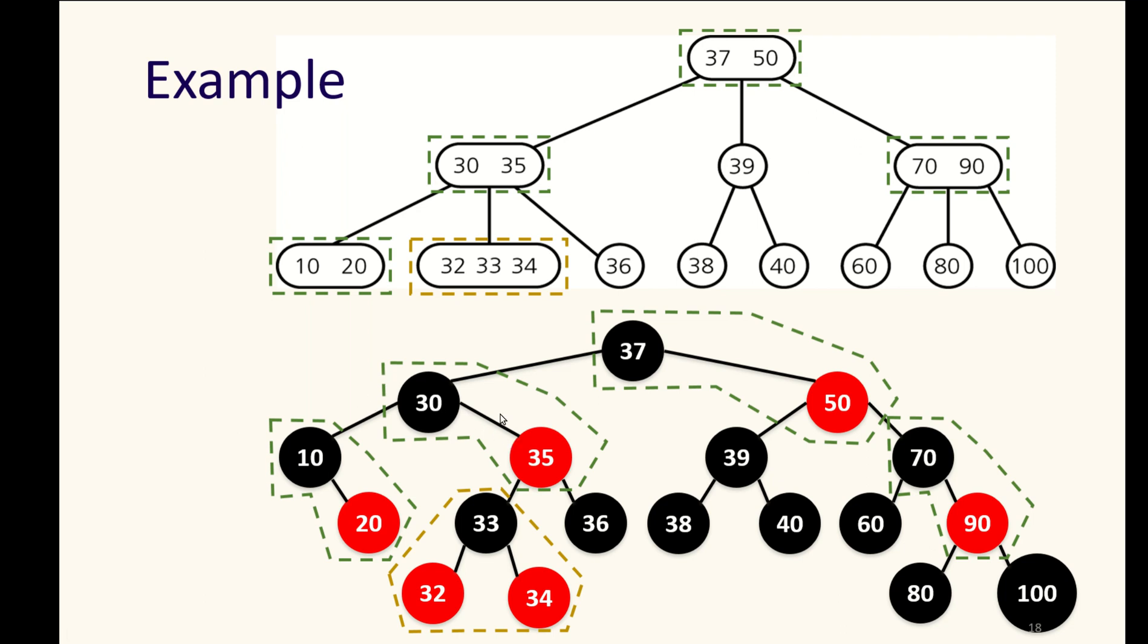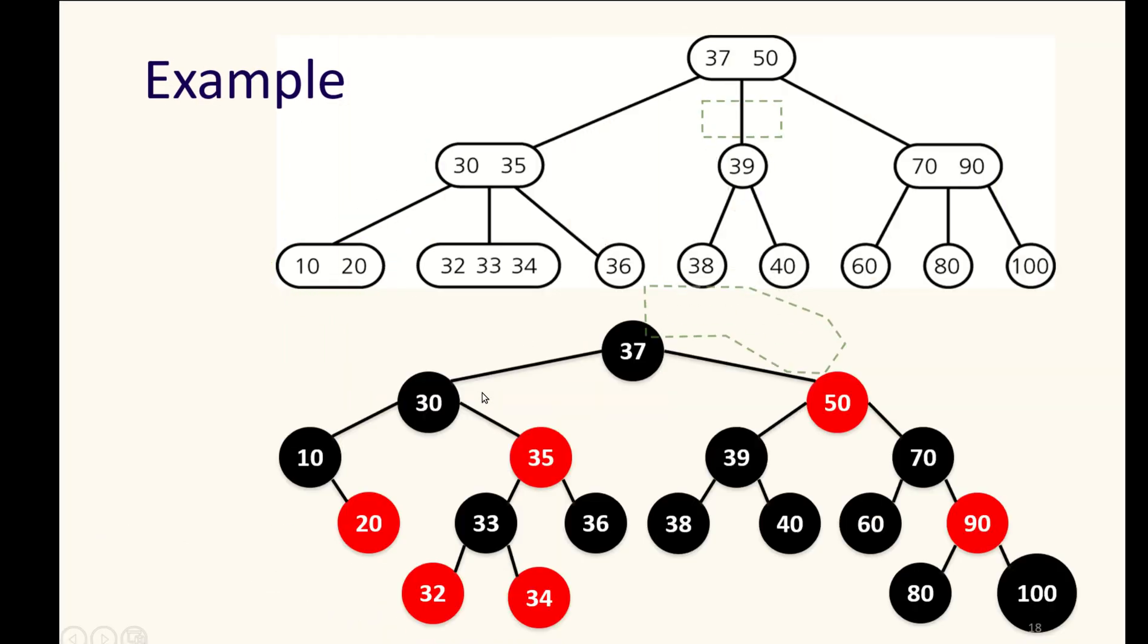We only count it with its red node child, and that makes it a three node in our translation to the 2-3-4 tree here.